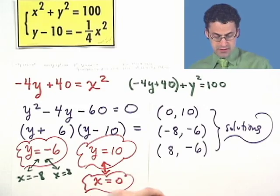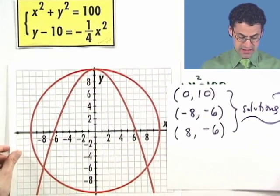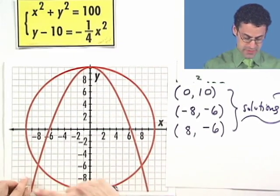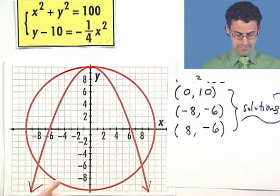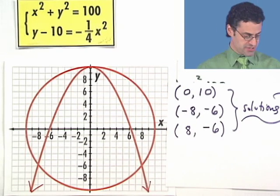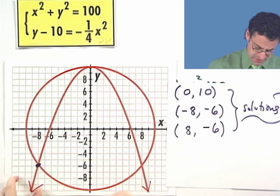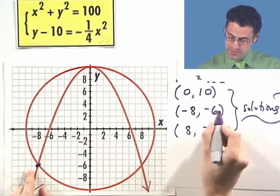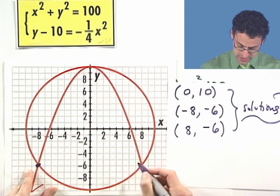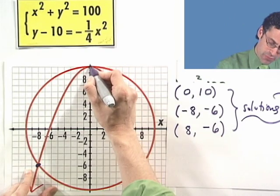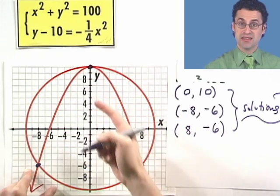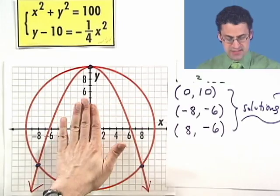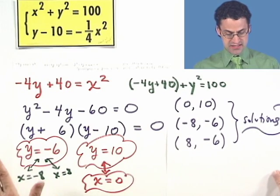Are these solutions correct? One way to check is to look at a graph. The first equation is a circle centered at the origin with radius 10, and the second is a sad face parabola. Looking at the graph, we can see the three intersection points: negative 8 comma negative 6, then 8 comma negative 6, and the tip top where they just touch at 0 comma 10. This is the visualization of all the algebraic work we did to solve the system by substitution.